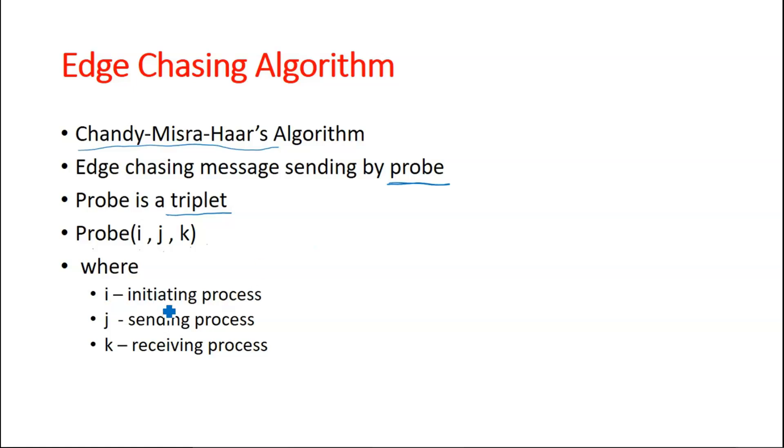So here i is the initiating process, let's say this is pi. And j is the sending process who sends the probe, which is pj.